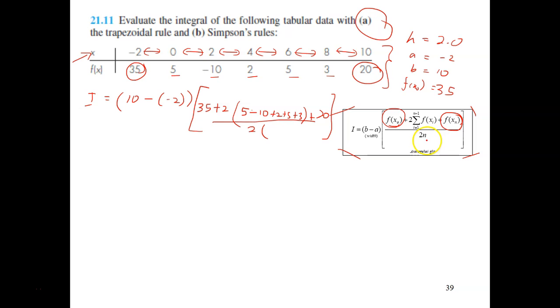Then plus the last one, which is 20 for fxn. 20 divided by 2 and 2. So n here is the number of segments. So how many segments you have in this data points? 1, 2, 3, 4, 5, 6. 6 segments. So n equals to 6. And here is the number of segments, not number of points. So solving this, you will get the answer as 65.